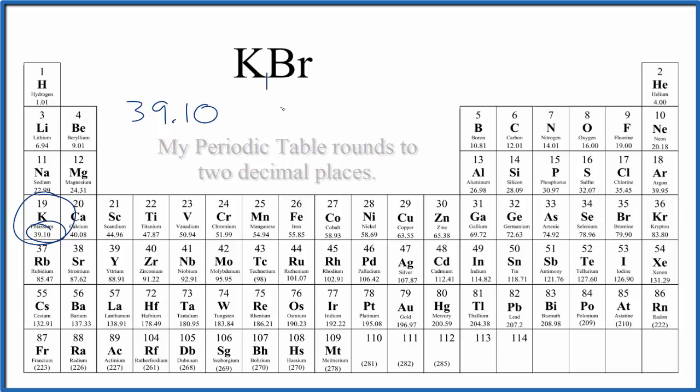We only have one potassium atom, so we're good there. To that, we add the bromine. We have one bromine atom. Bromine on the periodic table, that's 79.90,